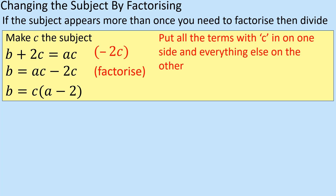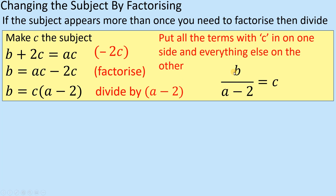Remember, we are trying to isolate C. So now I have C times something. The inverse of times is divide. So if I have C times something, then B needs to divide by it. So divide by (A minus 2), and you can see it's now B divided by (A minus 2) equals C. I've got rid of the bracket — you can leave it in, it wouldn't make an awful lot of difference. So B over (A minus 2) equals C. I've made C the subject.